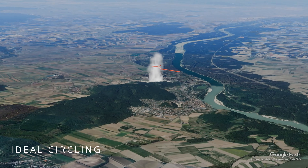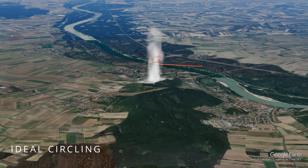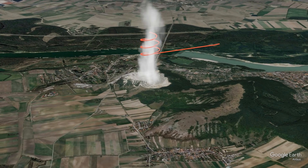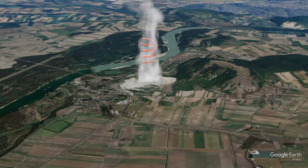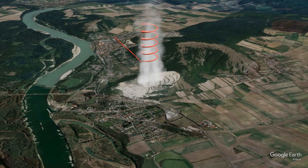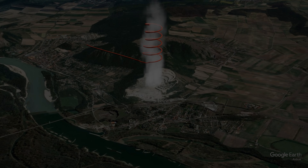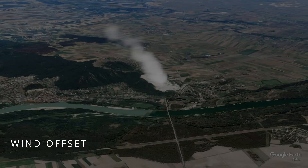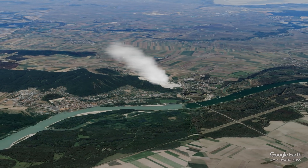Okay, let's head to the quarry. The plan would be to circle exactly above the expected updraft to gain enough altitude to continue flying. Sounds great, right? Unfortunately, life is not that simple — the wind is complicating our plans because it offsets the updraft.